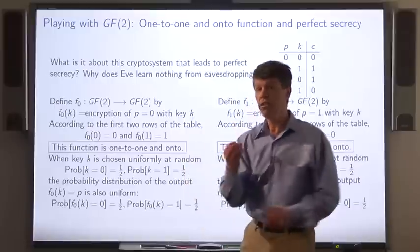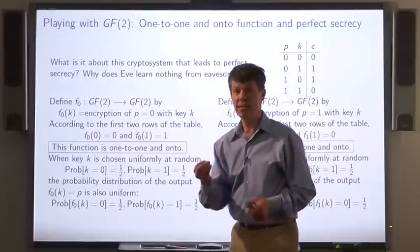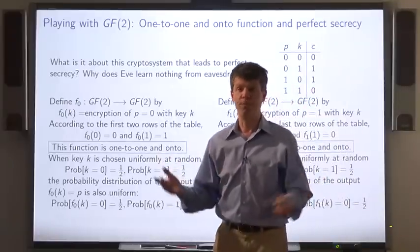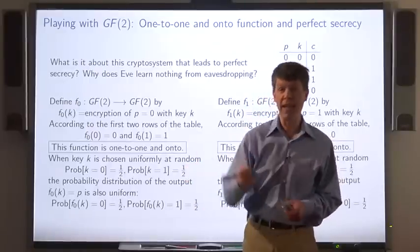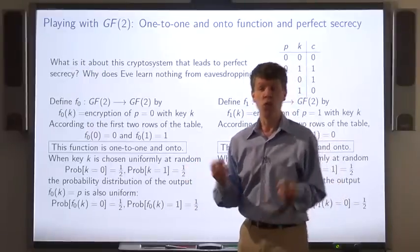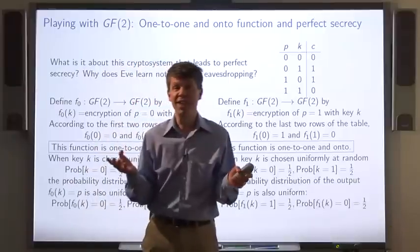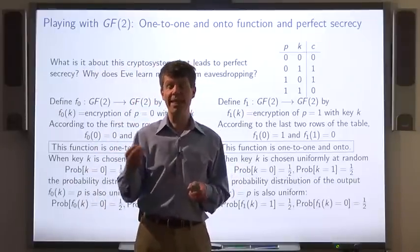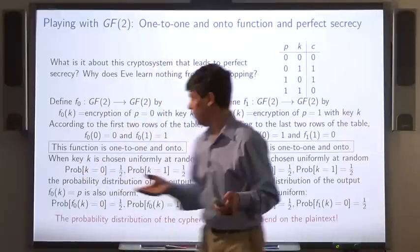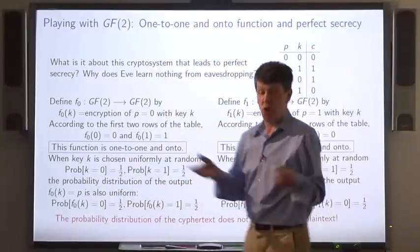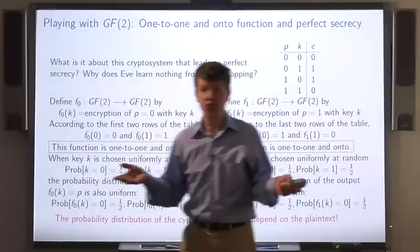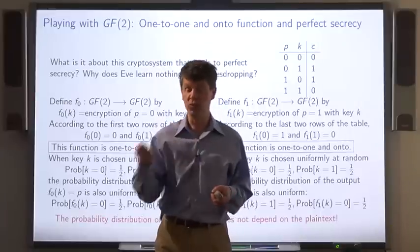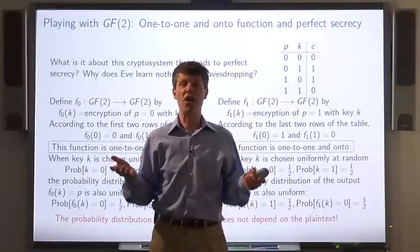So it seems, regardless of what the plaintext is, the probability distribution of the ciphertext is uniform—1/2 probability of 0 and 1/2 probability of 1. So, the probability distribution of the ciphertext doesn't depend on the plaintext when the key is chosen randomly. From Eve's perspective, there's no point in observing the ciphertext. She knows it's just going to be a bit, either 0 or 1, chosen according to the uniform distribution. She might as well stay home and flip a coin.